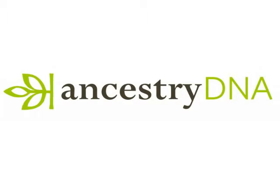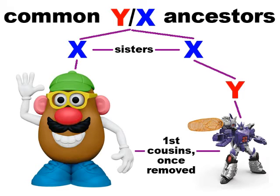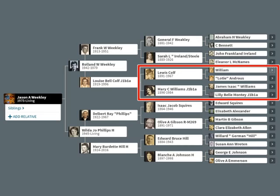Going through AncestryDNA is the easiest way to do this, and the best example I have is me and cousin Charlie. We didn't even know each other a couple years ago — in fact, he was adopted, so we didn't know anybody that he was related to. He turned out to be my first cousin once removed; his mom and my grandma were sisters. So that makes Charlie and I have a very strong match, and what that means for my tree is that this quarter of the tree — these are common ancestors — we have these people in common going all the way back. So it's a quarter of my tree, half of his.